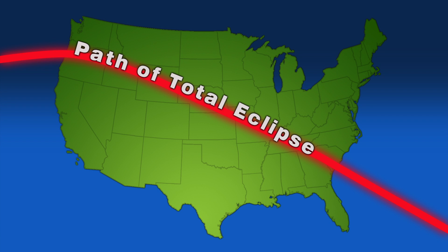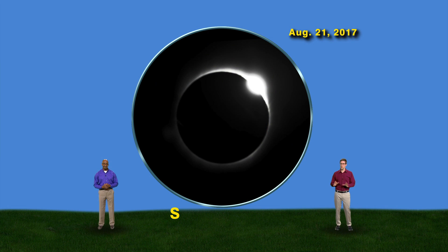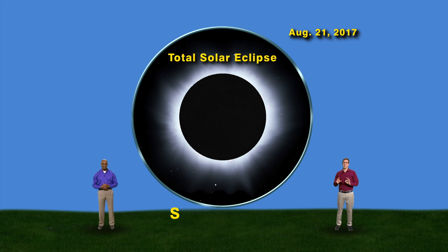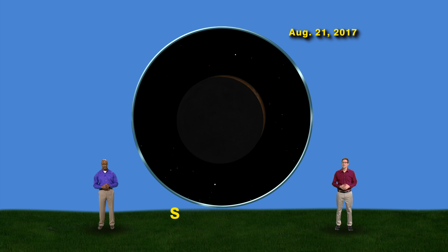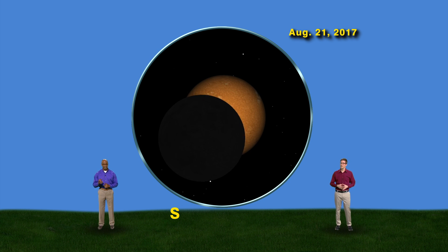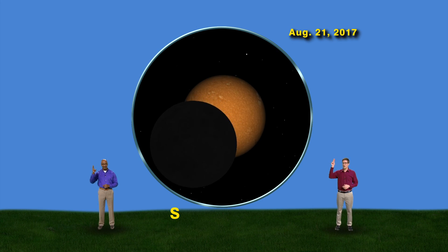From Oregon to South Carolina, don't settle for a partial, go for the total. It will look like the sun is gone. There will be a perfect black hole with the wispy atmosphere of the sun shining, called the corona. But totality won't last long. After a little more than two minutes, the sun will peak around the moon again. It's really quick but totally awesome. Keep looking up.